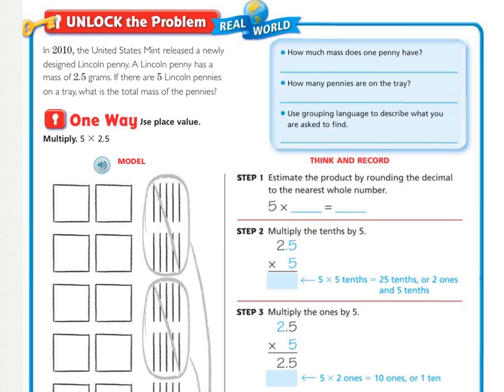How can you use drawings and place value to multiply a decimal and a whole number? Unlock the Problem. In 2010, the United States Mint released a newly designed Lincoln penny. A Lincoln penny has a mass of 2 and 5 tenths grams. If there are 5 Lincoln pennies on a tray, what is the total mass of the pennies?